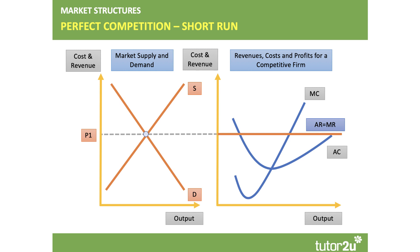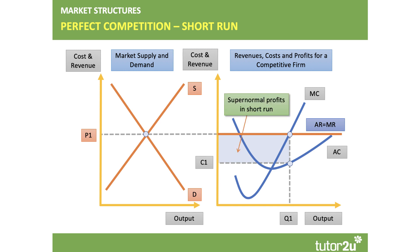Price P1 becomes the demand curve and also the marginal revenue curve for the firm, so AR equals MR in perfect competition. For a profit-maximizing firm, they produce output Q1 where MC meets MR. We find the unit cost C1 using the average cost curve, and because price is above cost per unit, they're making the blue shaded area, which represents supernormal profit. In this situation we'd expect new firms to enter the industry.